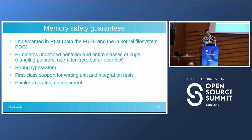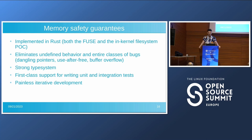For PuzzleFS, we want memory safety guarantees, which led to the decision of implementing it in Rust — both the FUSE version and the kernel file system. Rust eliminates undefined behavior and entire classes of bugs such as dangling pointers, use-after-free, and buffer overflows. It has a very strong type system and first-class support for writing unit and integration tests, which in my personal experience leads to very painless iterative development.